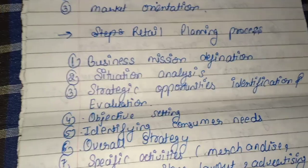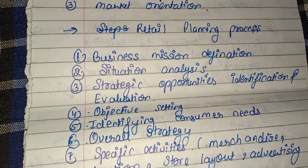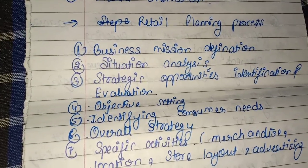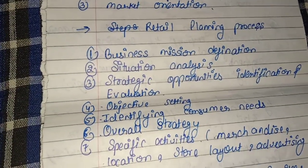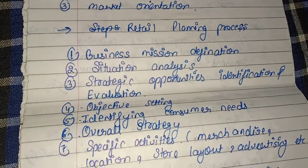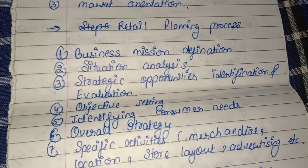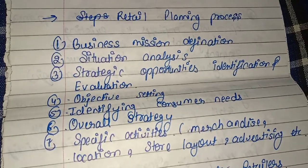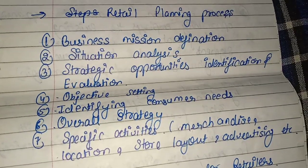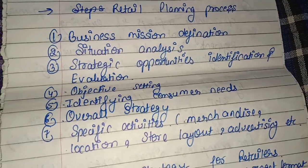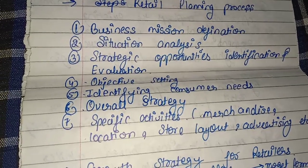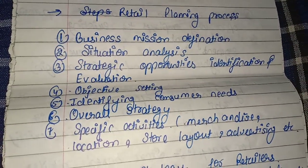Now we have the retail planning process. First is business mission definition — any retailer needs to know their business mission and why they are in retailing. Second is situation analysis — we analyze which particular situation is better for our products. The process also includes strategic opportunity identification and evaluation, objective setting, identifying consumer needs, and forming an overall strategy with specific activities like merchandise, location, store layout, and advertisement, completing the entire planning process.